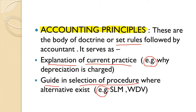The second role of accounting principles is to guide the selection of procedures where alternatives exist. For example, for depreciation we have various methods: the SLM method, the WDV (Written Down Value) method, the Sum of Digits method, and the Annuity method. Accounting principles guide us on which method to prefer and use.